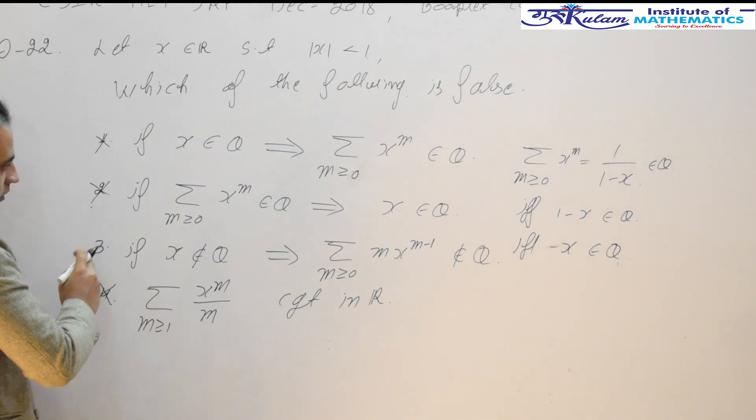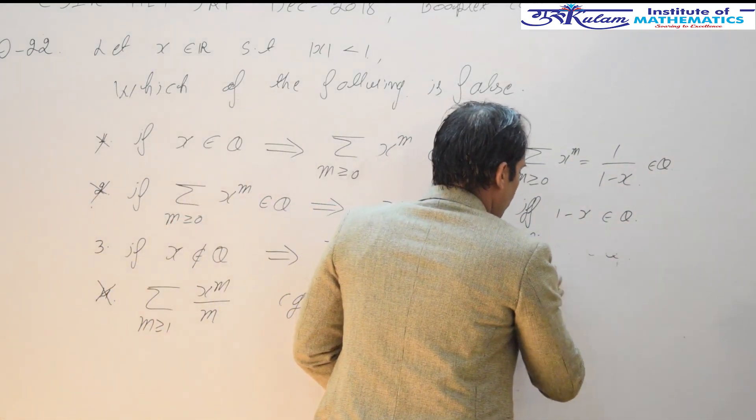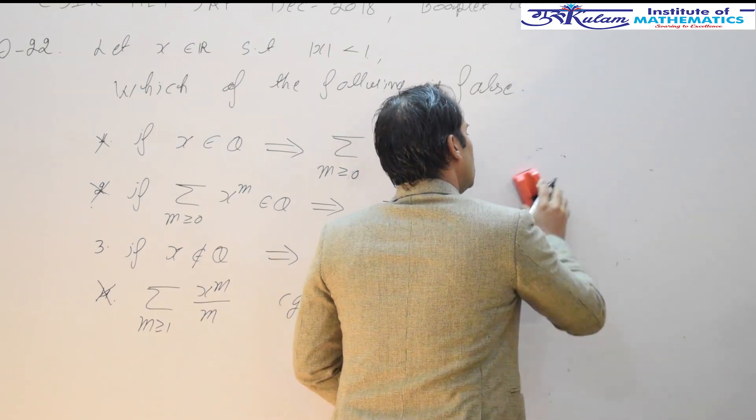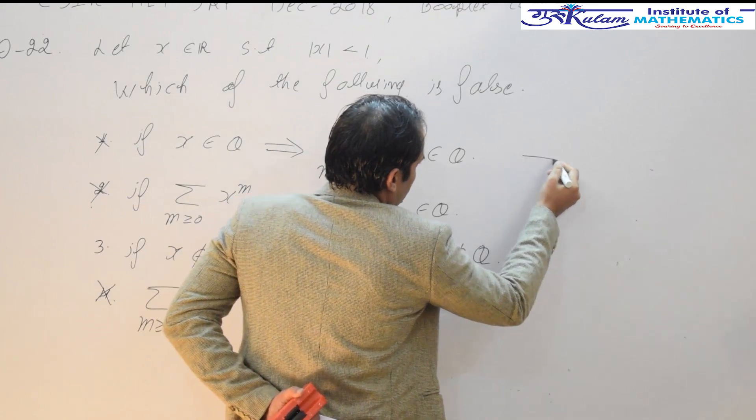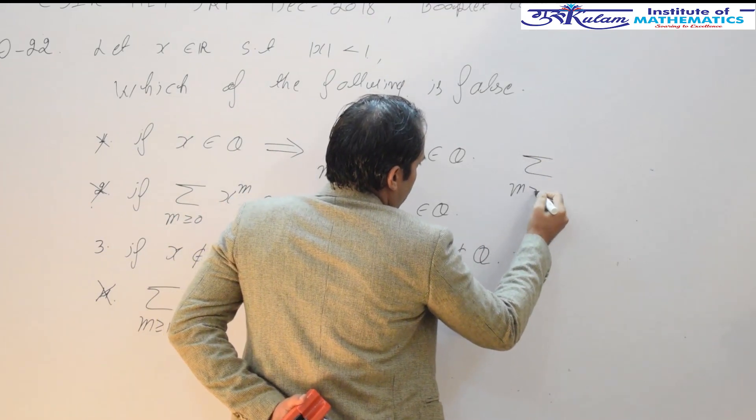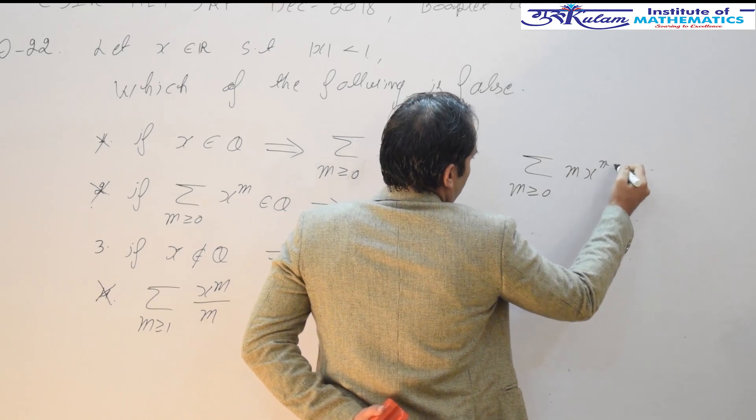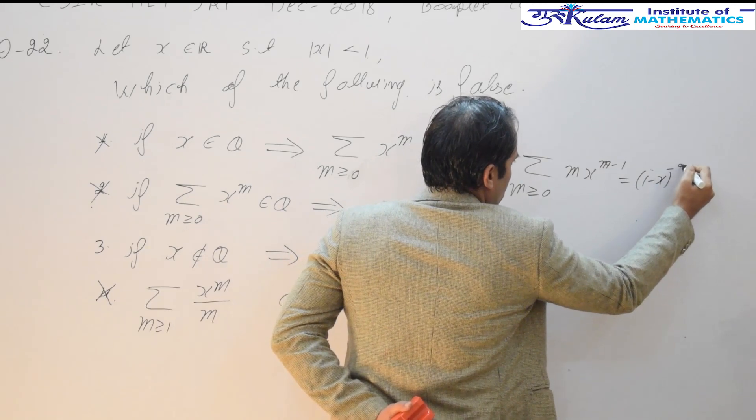Now we have to check whether the third statement is correct or incorrect. So let us come to option 3. You can easily identify this summation m greater than or equal to 0, m x to the power m minus 1.